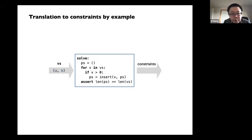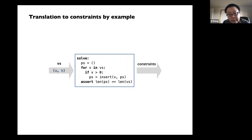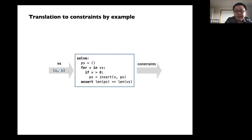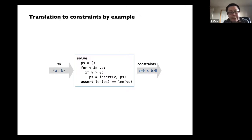Imagine we want to verify that the length of the output equals the length of the input — which of course doesn't hold in general, but suppose we just want to check that. Giving symbolic inputs like A and B, which can be any symbolic integers, we want to translate this entire thing into logical constraints. If you just write this manually, you'd write: both A and B should be positive. That's how you would manually encode this entire program.